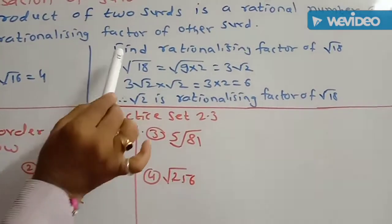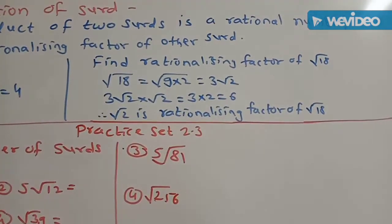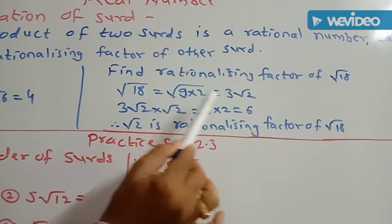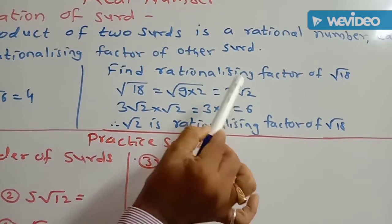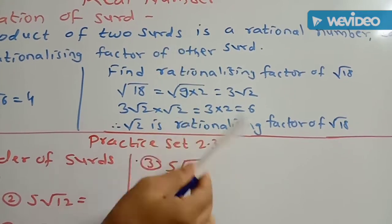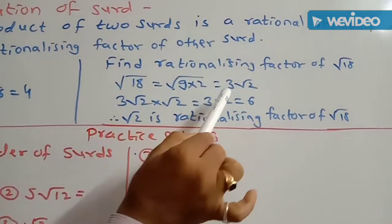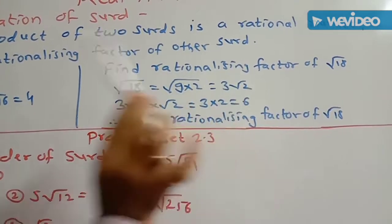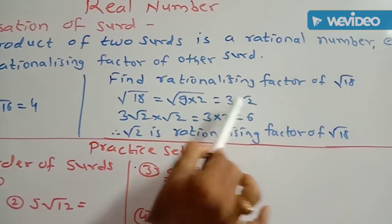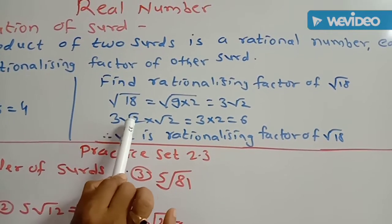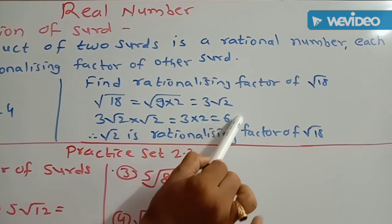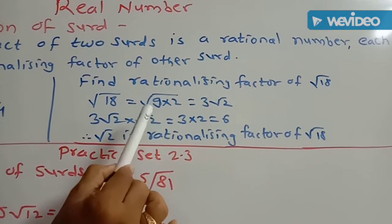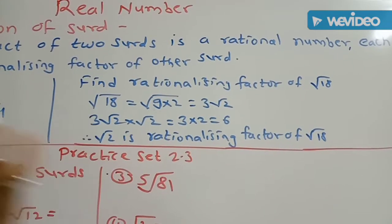Second example: find the rationalizing factor of root of 18. Root of 18 can be written as root of 9 into 2, and square root of 9 is 3, giving 3 root of 2. Now we need one SIRD whose product with 3 root of 2 is a rational number. Multiplying by root of 2: 3 root of 2 into root of 2 equals 3 into 2 equals 6, and 6 is a rational number. Therefore root of 2 is the rationalizing factor of root of 18.